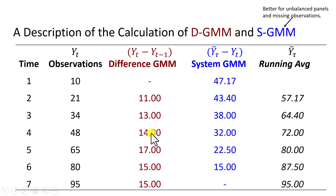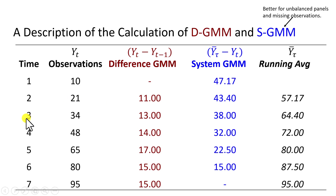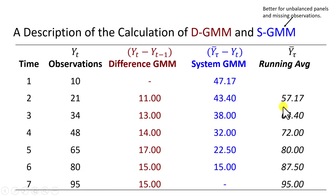Here's an example of how that works. From this original series, if we were to use Difference GMM, in the first time period we're not going to have any observations since there's nothing preceding it. In the second time period it's going to be 21 minus 10 to get us 11, third one 34 minus 21 to get us 13, and so on. With orthogonal deviations in System GMM, in the first time period we first calculate the average of the future observations from 21 down to 95, which is 57.7, and so 57.7 minus 10 gives us 47.7.